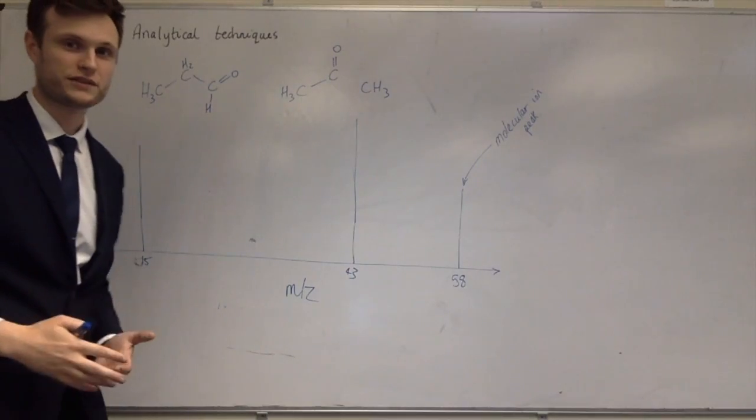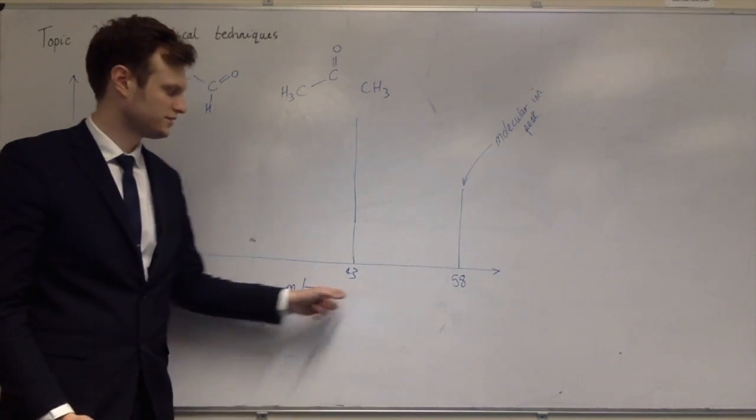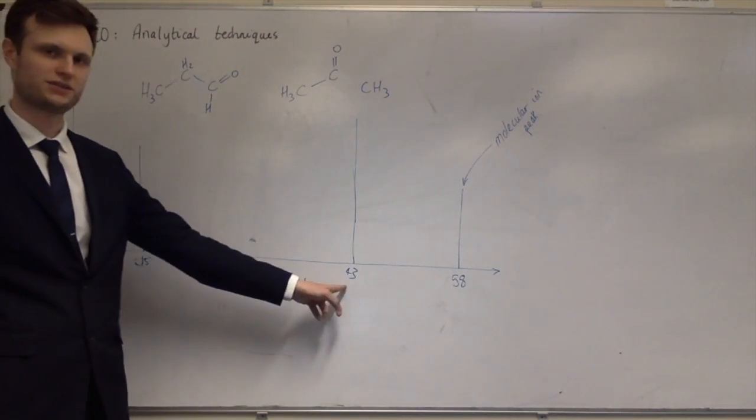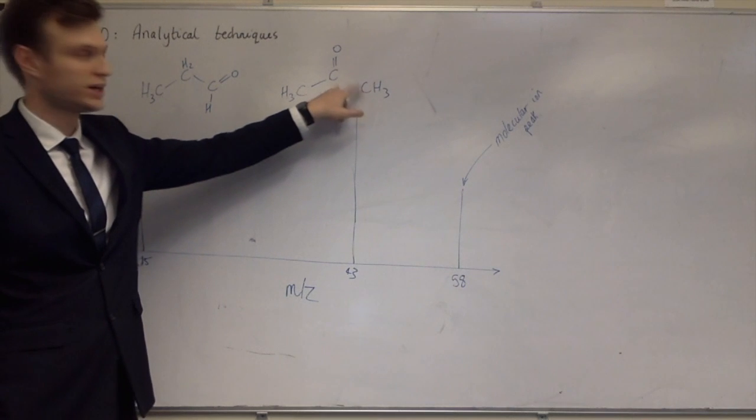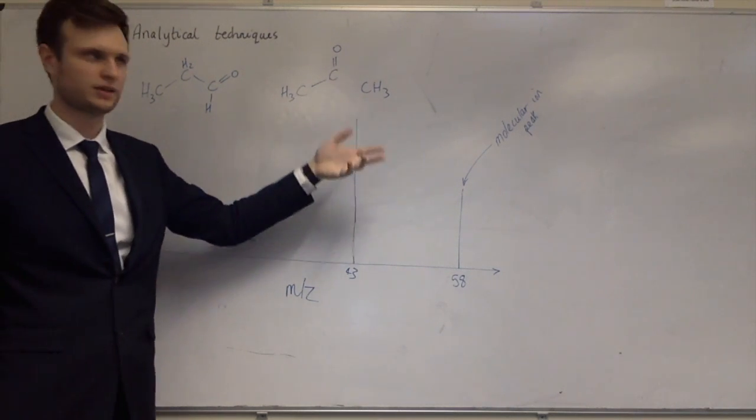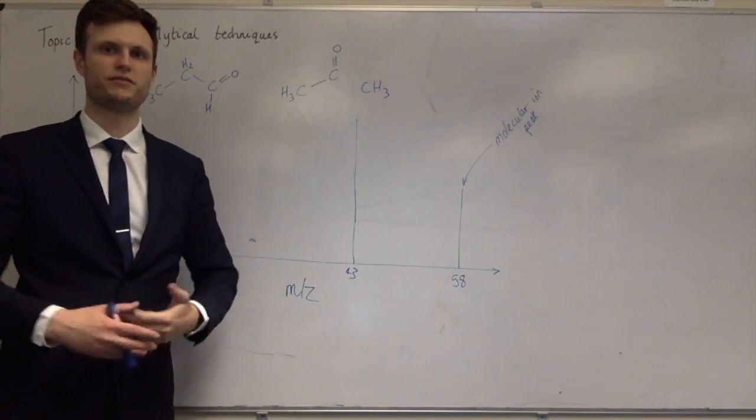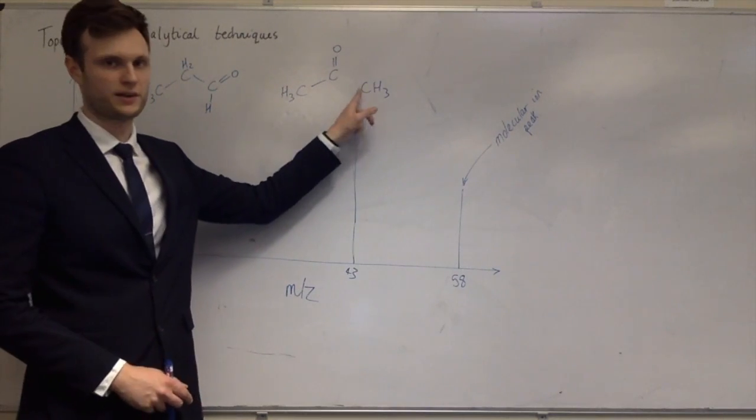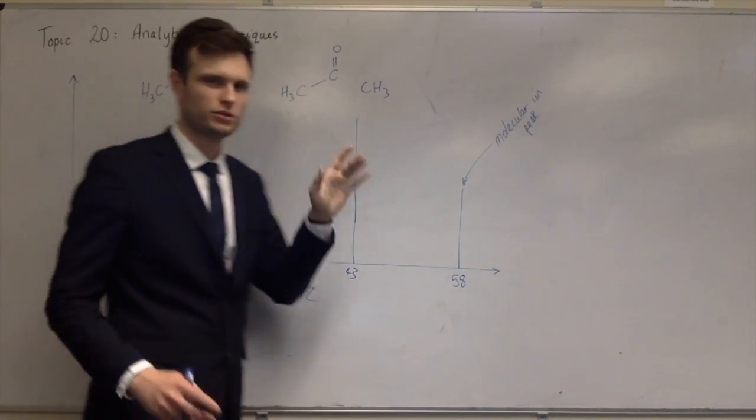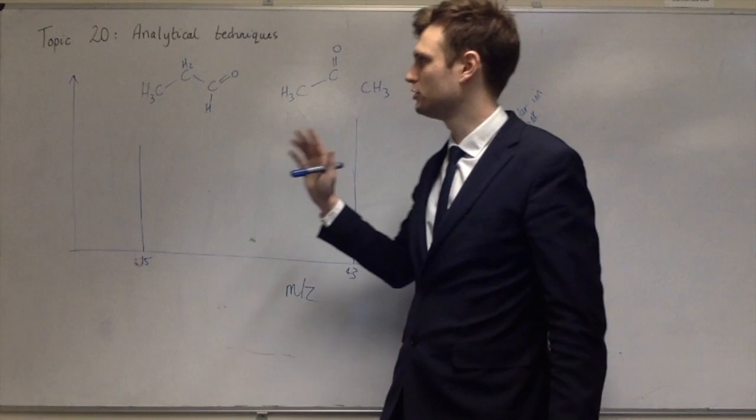And there's actually a lot of different bonds you can break. You can break more than one bond. But these are the two you'd expect to see, especially this 43. Because when this bond breaks, this carbon has already got a delta plus on it. So it's more likely to have a full positive charge on it than the other carbon.